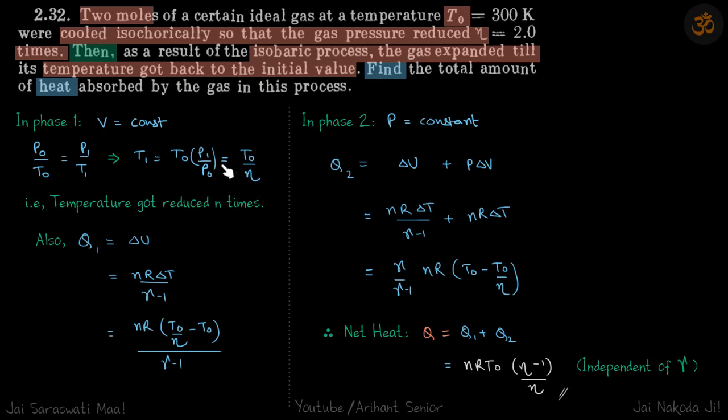So this is the final temperature after the first process. So now we can find the heat absorbed during the first process, that is delta U, because work done is zero.